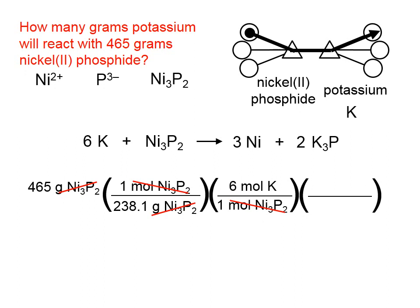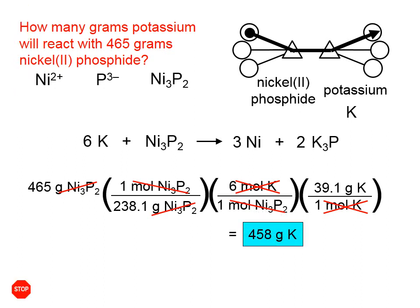From the balanced equation: 1 Ni₂-phosphide reacts with 6 potassiums. We orient the moles of Ni₂-phosphide in the denominator so they cancel. Then we cross the last bridge using the molar mass of potassium: 1 mole of potassium is 39.1 grams. Typing into the calculator: 465 ÷ 238.1 × 6 × 39.1 gives 458 grams of potassium.